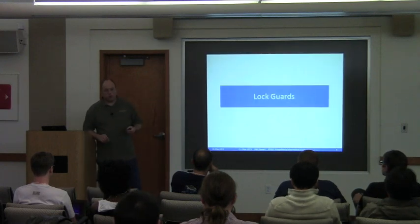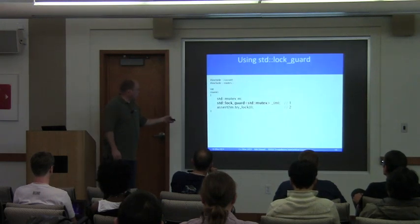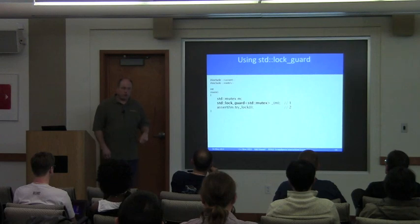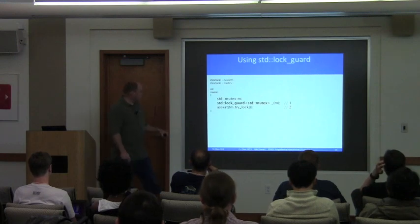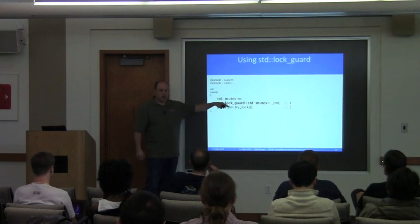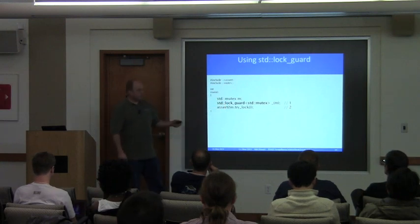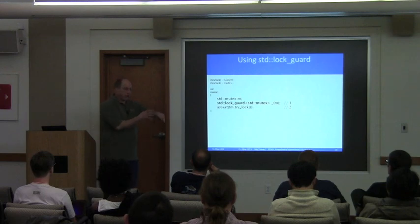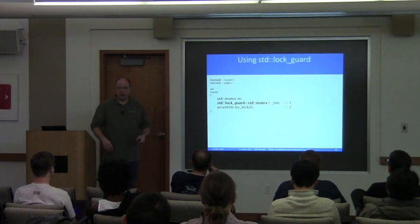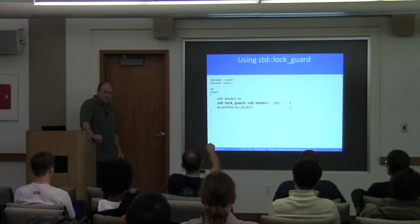There are lock guards for RAII. The simplest is std::lock_guard, which takes a lockable type — that might be std::mutex, recursive_mutex, whatever. The constructor blocks trying to lock the mutex, and then the destructor, when you go out of scope, releases it. Here we show try_lock on the mutex fails because it's already locked. As an idiom, I use underscore for variables I don't need to touch again. The destructor unlocks at the end of scope.